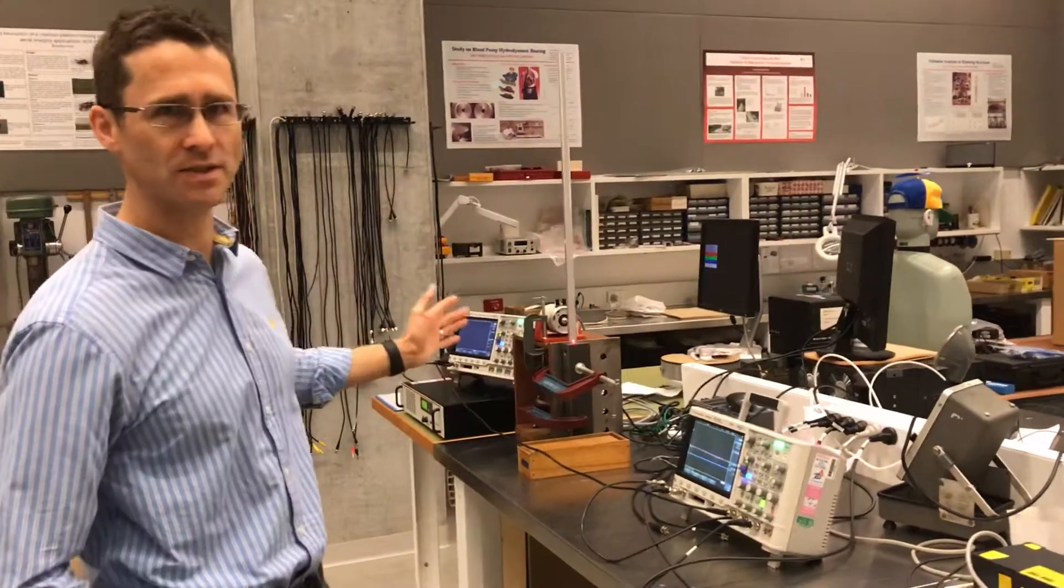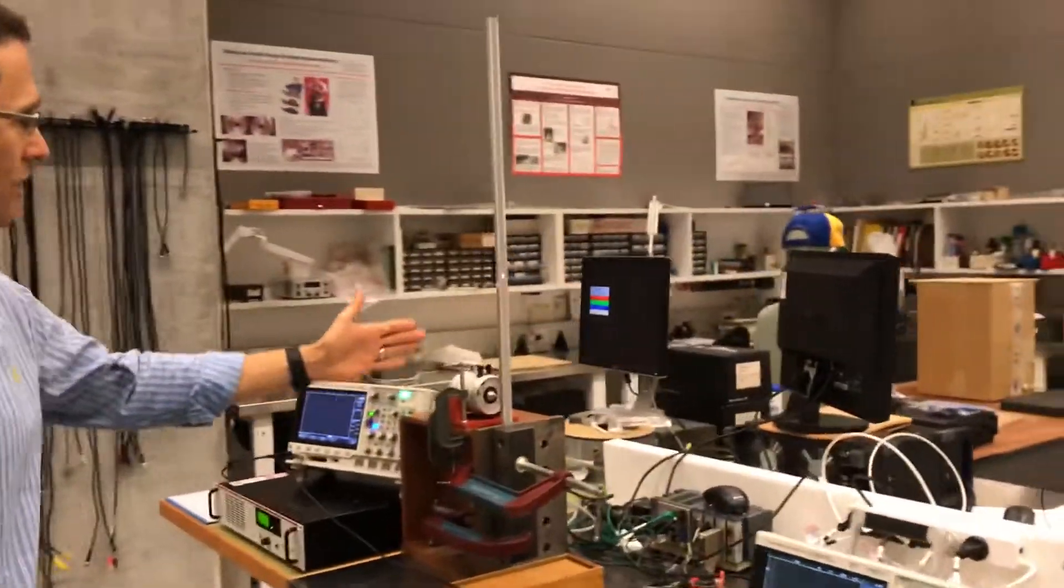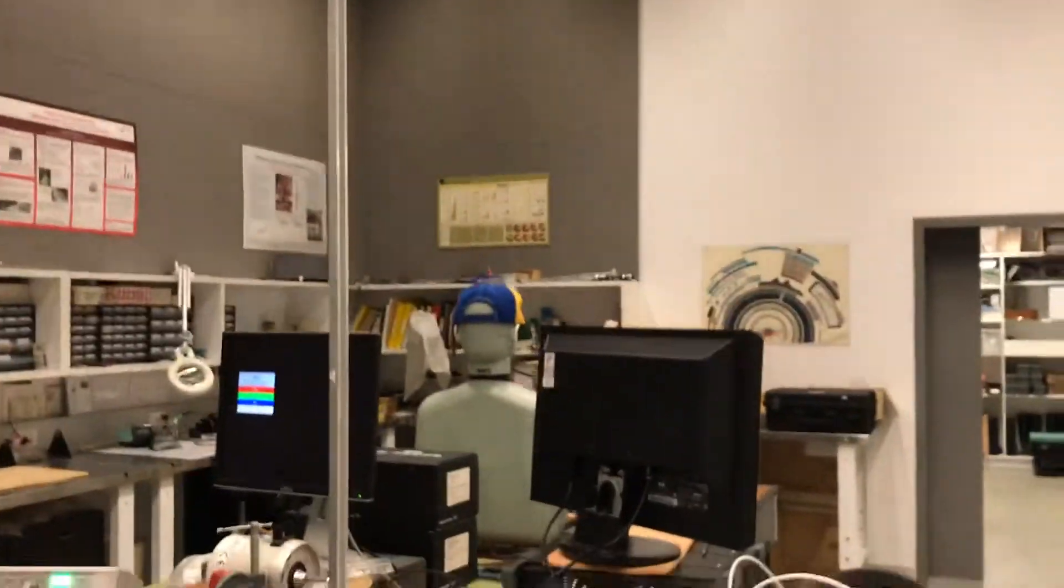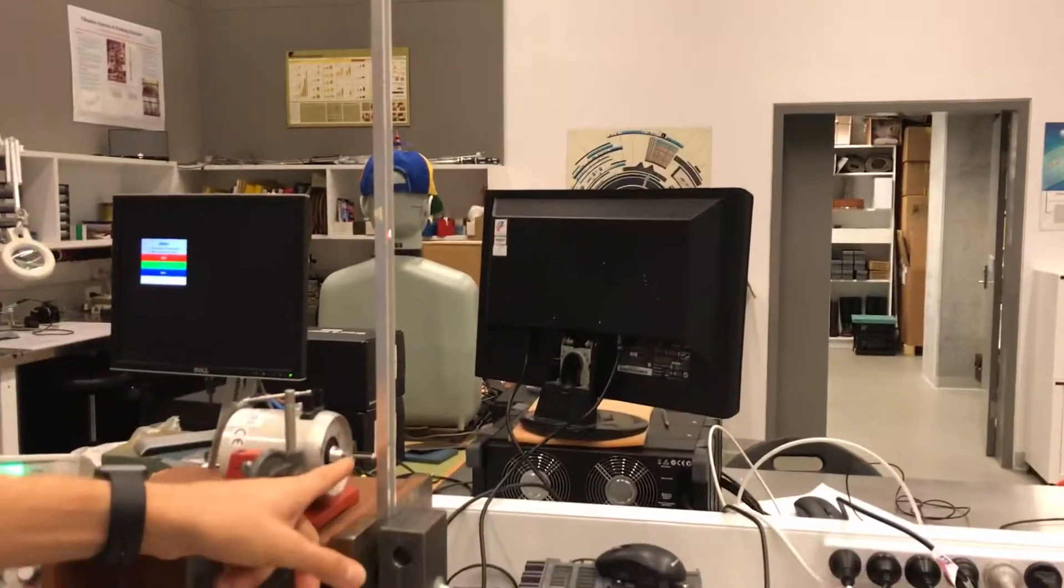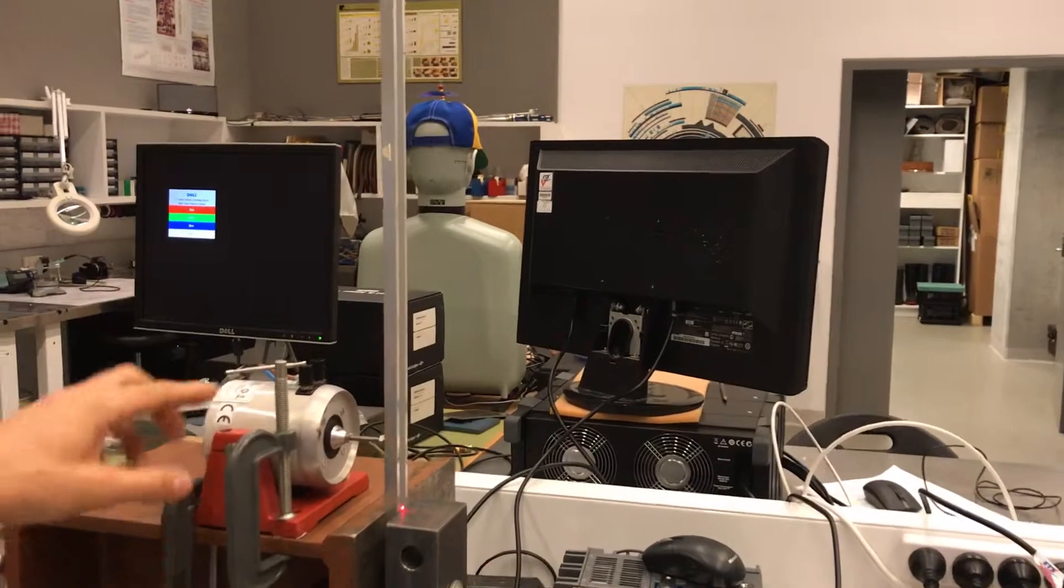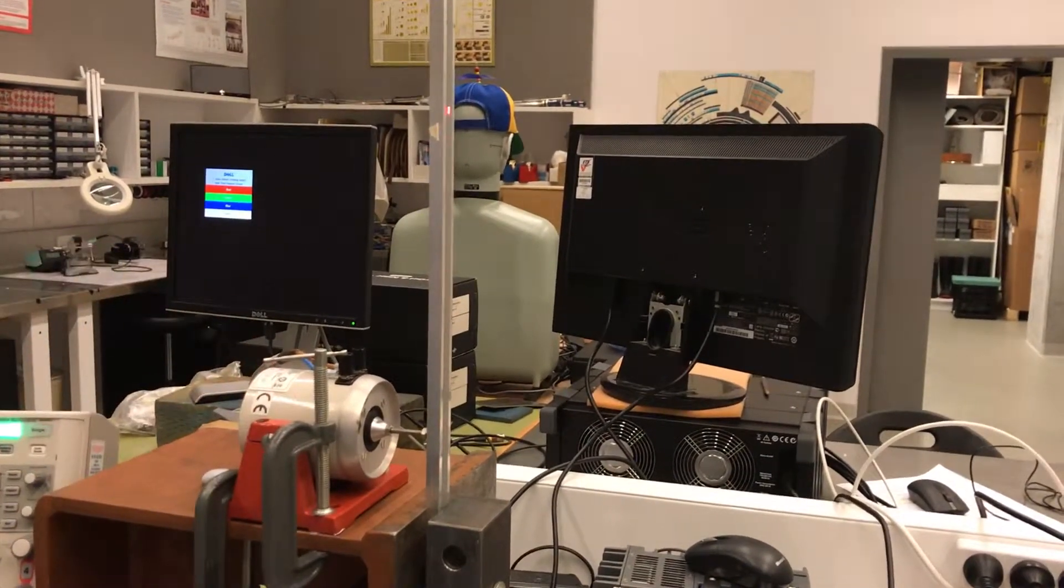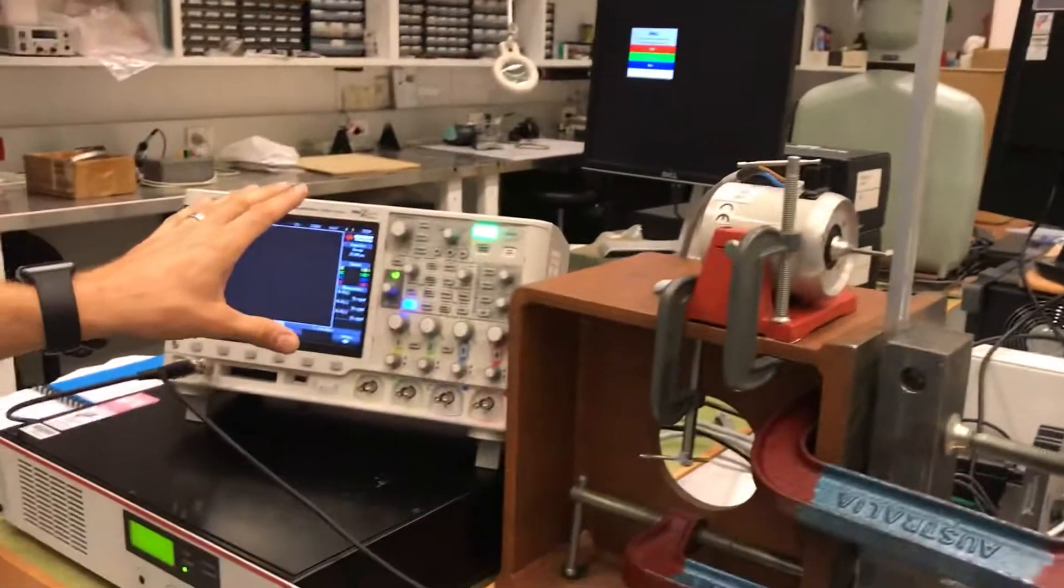As you can see in this experimental setup, I've got a cantilever beam, which is my target structure of interest, and we've got an electrodynamic shaker attached to the beam with a short rod. We can drive the electrodynamic shaker with a signal generated by this oscilloscope.